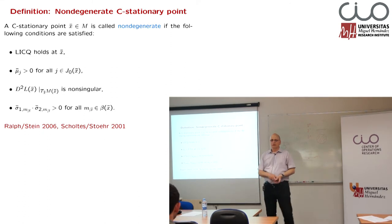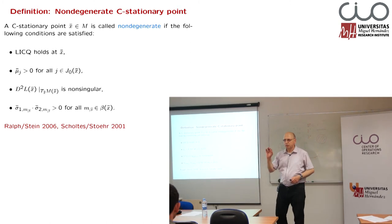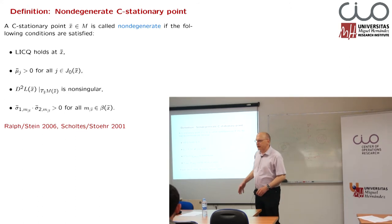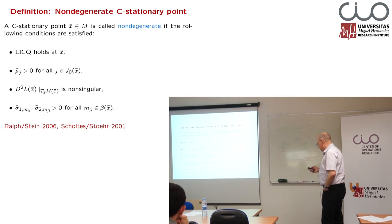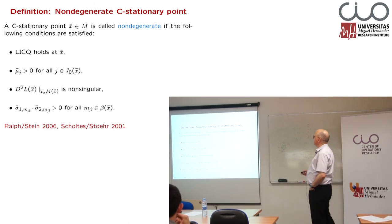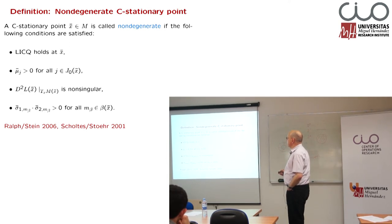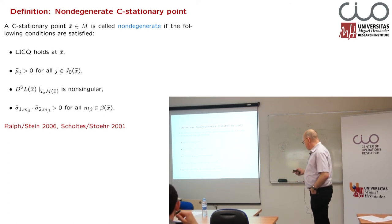We exclude cases which give us, for example, problems at infinity — we are considering nice points. I will come back to this later, justifying that it makes sense to consider only non-degenerate points. We say that the C stationary point is non-degenerate if: the linear independence constraint qualification holds; all corresponding Lagrange multipliers belonging to active inequality constraints are positive; the Hessian restricted to the tangent space is non-singular — so all eigenvalues are non-zero, either positive or negative.